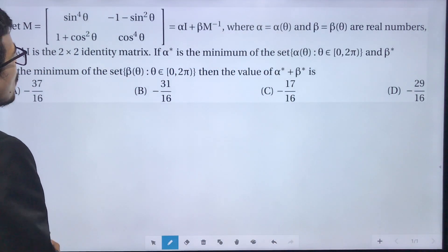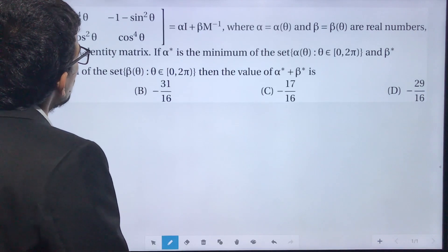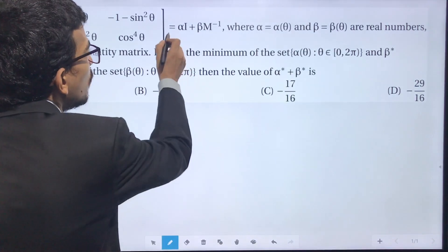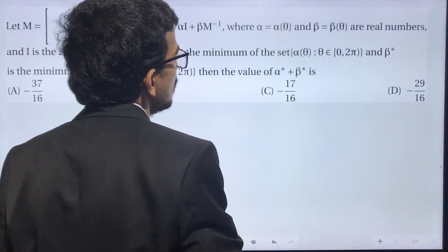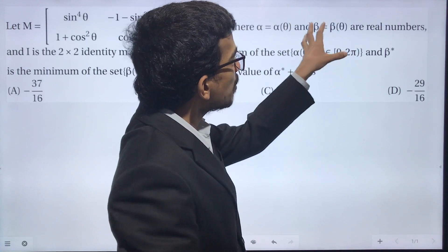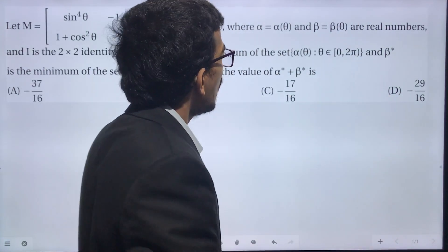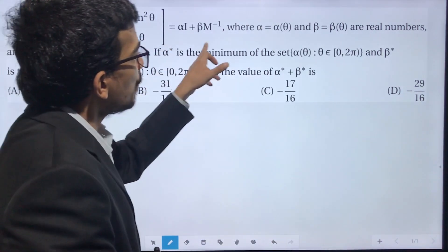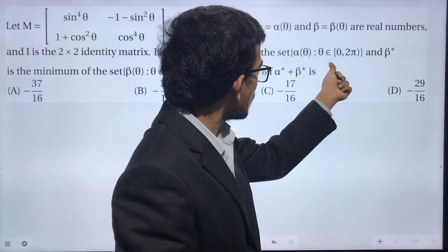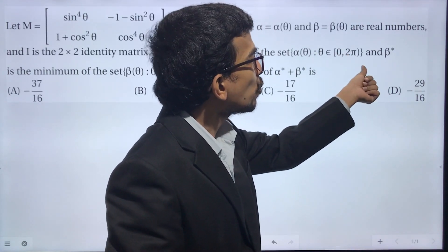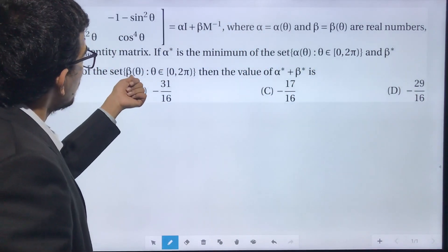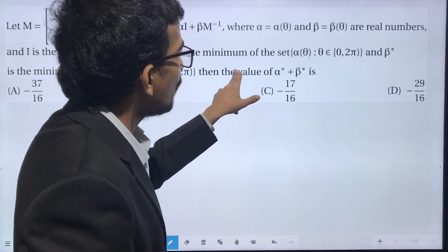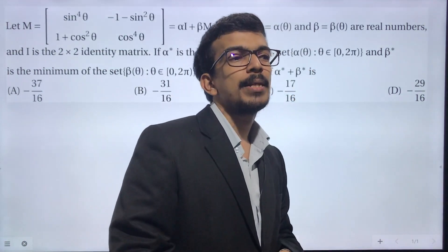Let M be the matrix with entries sin⁴θ, (-1 - sin²θ), (1 + cos²θ), cos⁴θ, equal to αI + βM⁻¹, where α = α(θ) and β = β(θ) are real numbers and I is the 2×2 identity matrix. If α* is the minimum of the set of all α(θ) for θ in [0, 2π] and β* is the minimum of the set of all β(θ) for θ in [0, 2π], then find the value of α* + β*.